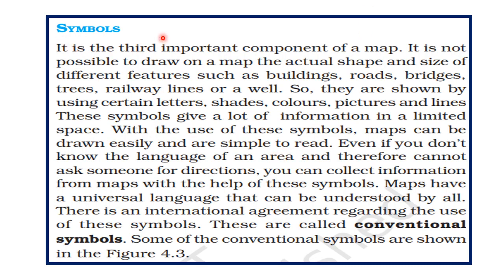Another component of maps are called symbols. As it is not possible to show all the features of the earth in their same shape on the map, we use symbols. Different shapes of drawing represent the different features, called symbols.